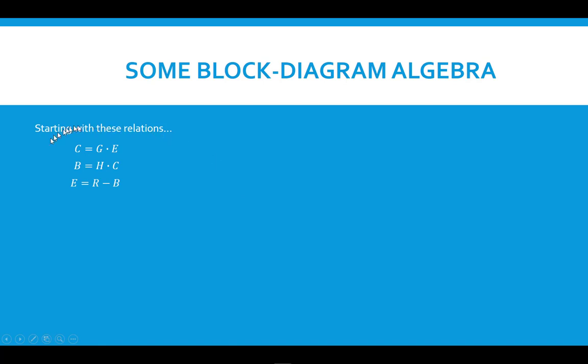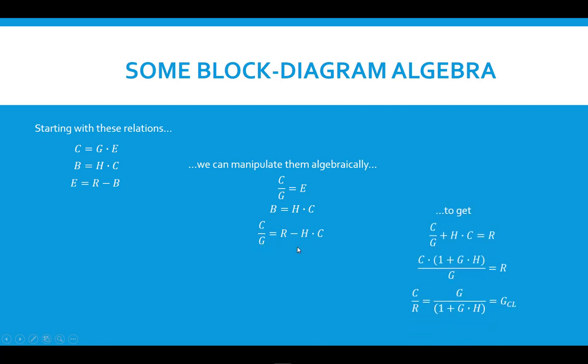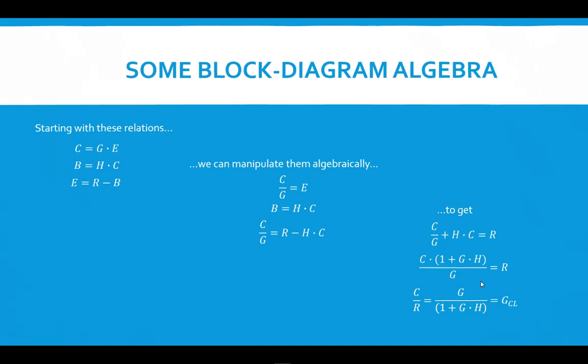So we start with these relations here, and we can manipulate them algebraically. We divide through by G for the first one, we do nothing with the second one, and we substitute the second one into the third one, and the first one into the third one also, and we wind up with this relationship here. And then we can use that by collecting the terms on the left-hand side that have a C in them, factoring the C out. And again, the transfer function is simply the output over the input, and if we perform that algebraic operation, we wind up with this transfer function here: G over 1 plus GH.